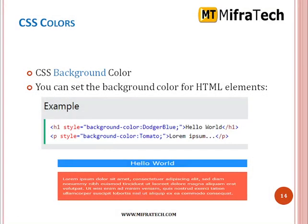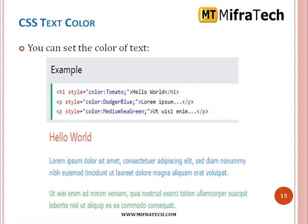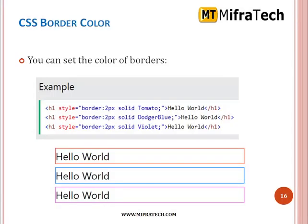CSS colors. CSS background color — you can set the background color for HTML elements. H1 style background color — this can be set in HTML also. CSS text color — you can set the color of text, for example H1 style equals color tomato — Hello World. And paragraph style color dot blue. You can also set the H1 style by mentioning a border — border equal to 2 pixels solid tomato. Where we want to specify the border height and width, we mention border style equal to border and the pixel value.